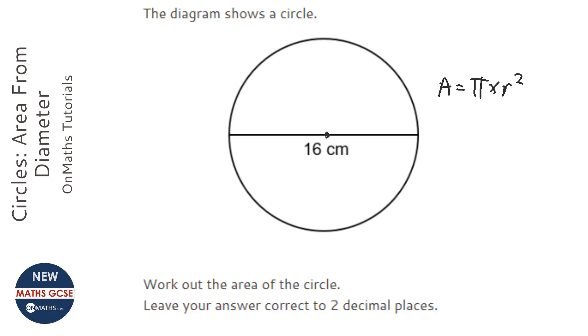Now in this question we are given the diameter because the diameter is the full way across the circle. So to find the radius when you have the diameter you just halve it. So we are going to do 16 divided by 2 which is 8.